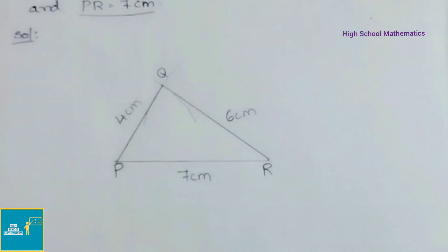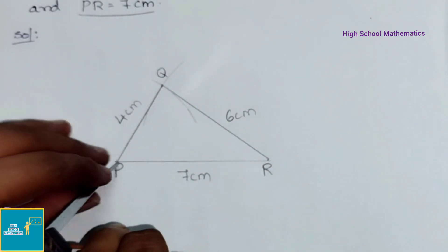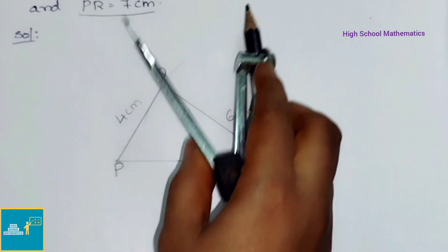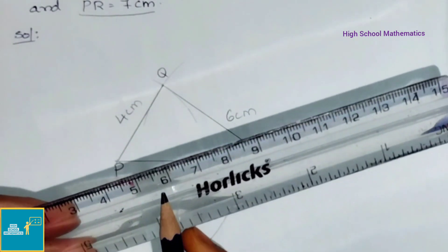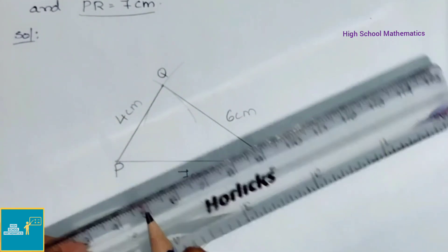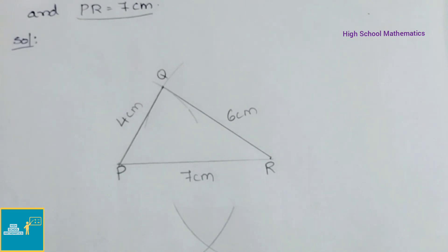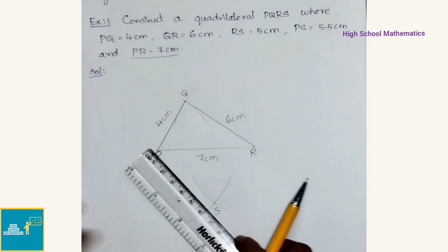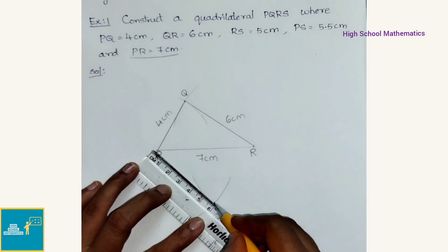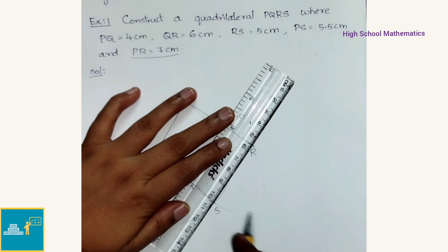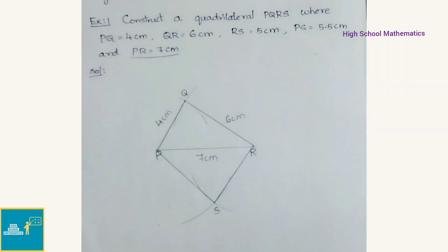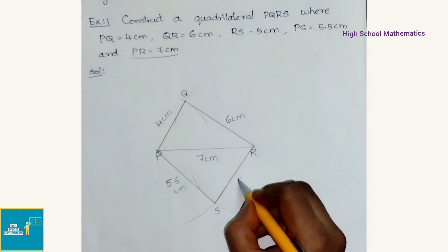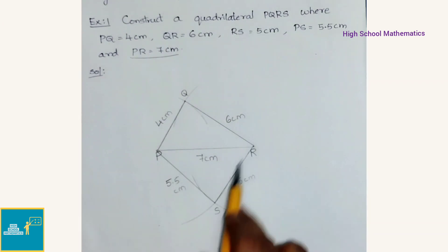Now with P as center, we take a 5.5 cm radius and draw an arc. Next, with R as center, we draw an arc of radius 5 cm. We measure 5 cm and with R as center draw an arc that meets at point S. Then we join PS and RS. Now mention PS equals 5.5 cm and RS equals 5 cm. Therefore PQRS is the required quadrilateral.